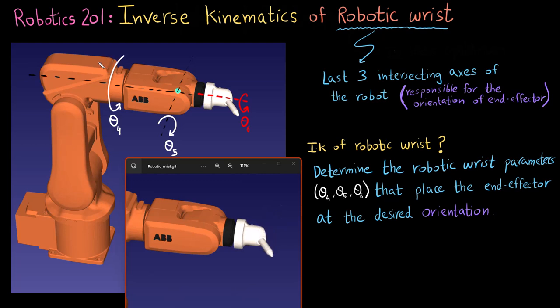Similarly if it was let's say a seven degree of freedom robot, the last three axes are always going to be responsible for the orientation and all the axes before the last three are going to be responsible for the position.